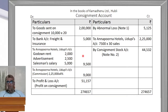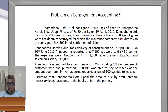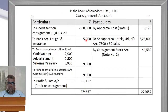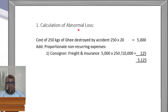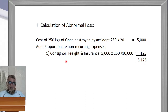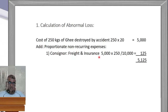We now calculate the abnormal loss. Cost of 250 kg destroyed = 250 into 20 = Rs. 5,000. Proportionate non-recurring expense: freight and insurance of Rs. 5,000 allocated proportionately = 5,000 into 250 divided by 10,000 = Rs. 125. So total abnormal loss = Rs. 5,000 + Rs. 125 = Rs. 5,125. This is Note 1: abnormal loss = Rs. 5,125.